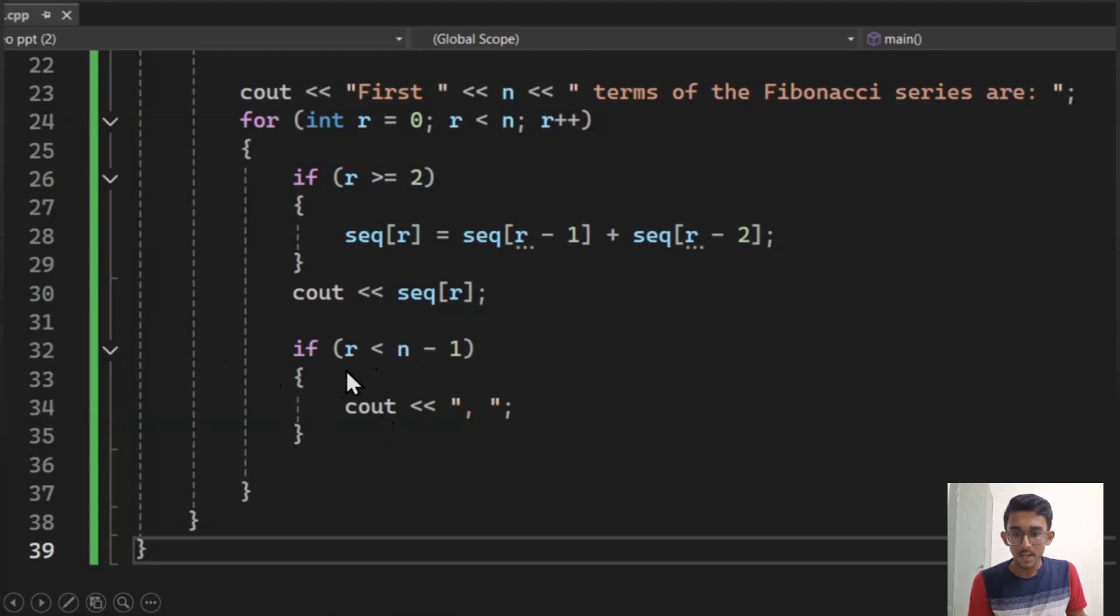What this if statement does is it does not run for r equal to n minus 1. So basically I do not get that extra comma in the end.